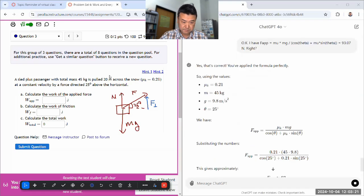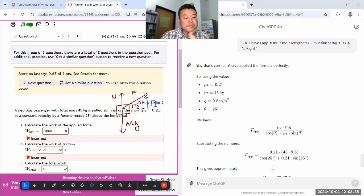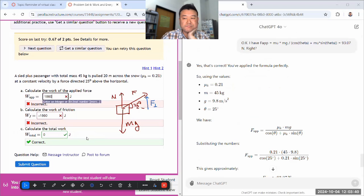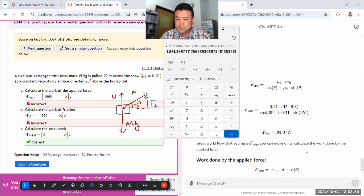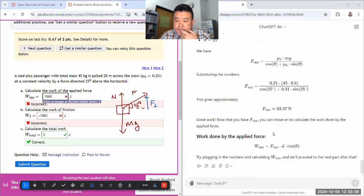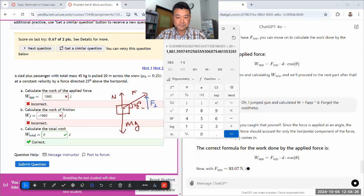I jumped the gun and calculated Ff times d. Forgot the cos theta. So let me do that: times cosine of theta. If you ever want to trap me, give me a situation where I think I can do the mental math, and that'll cause me to make mistakes.